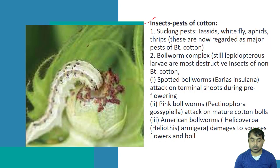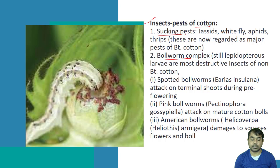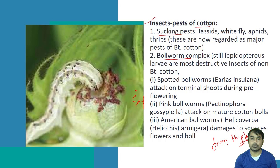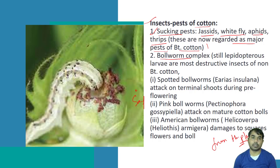Now we will talk about the insect pests of cotton. In cotton there are two types of insect pests: the first is the sucking type and the other is the boll worm complex. For the sucking type, those insects suck the sap from the plant. Here you can see jassid, whitefly, aphid, and thrips — these are regarded as major pests right now.